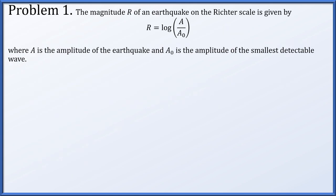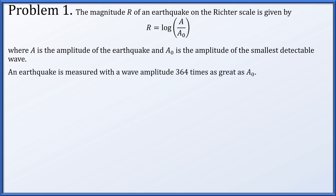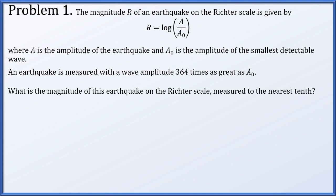Problem 1. The magnitude r of an earthquake on the Richter scale is given by the common logarithm, or log base 10, of the ratio a divided by a0, where a is the amplitude of the earthquake and a0 is the amplitude of the smallest detectable wave. An earthquake is measured with a wave amplitude 364 times as great as a0. Our amplitude, capital A, is 364 times as great as a0, so we set A equal to 364 times a0.